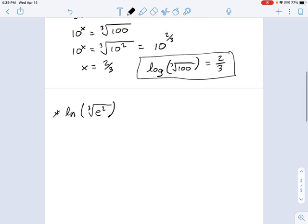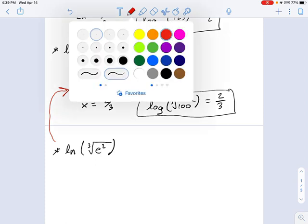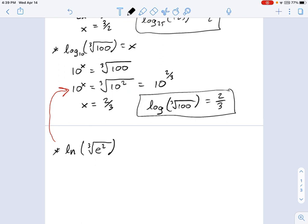And the last one I pulled in here was natural logarithm of the cubed root of e squared. Well, if you look at this, you'll see a similarity between this problem and this part of the previous problem, right? In the last problem, I had 10 to the x equals cubed root of 10 squared. And in this problem, once you rewrite it, remember natural log? Remember what that means? That means log base e. That might clear this up a little bit.